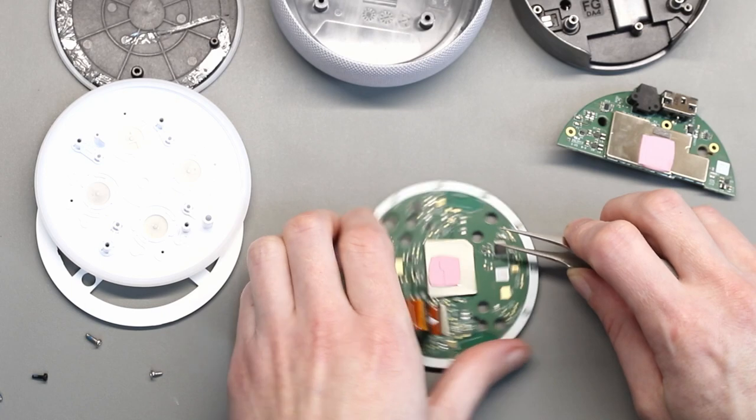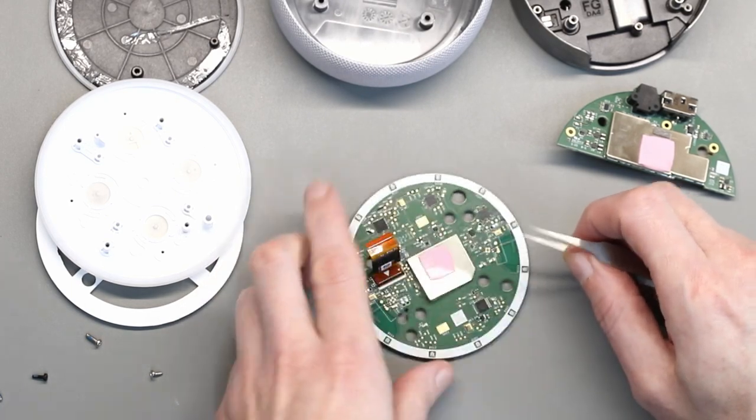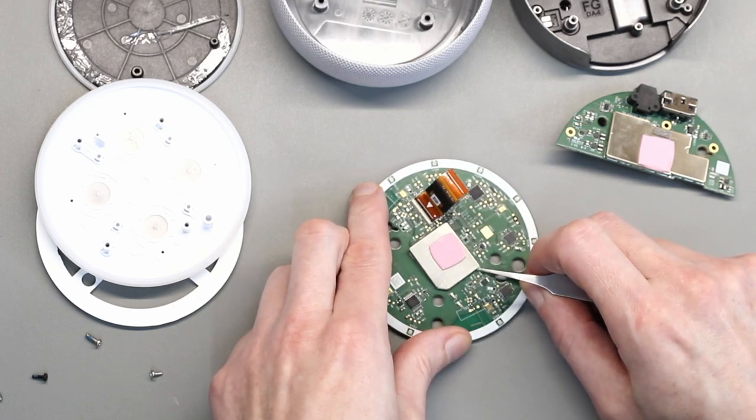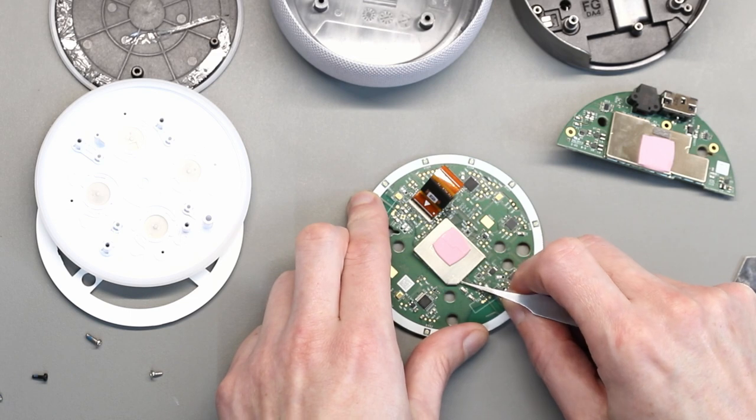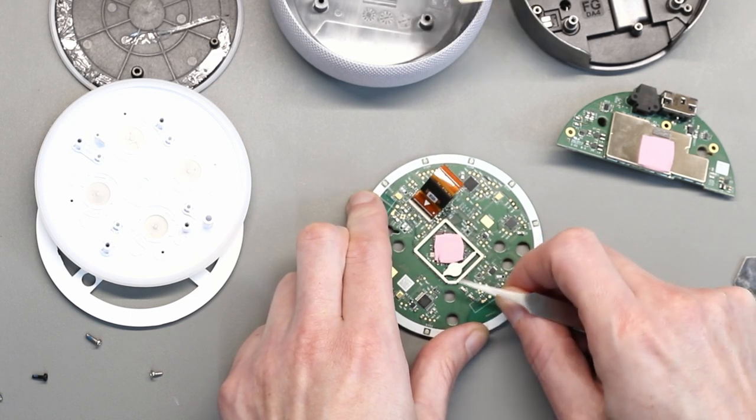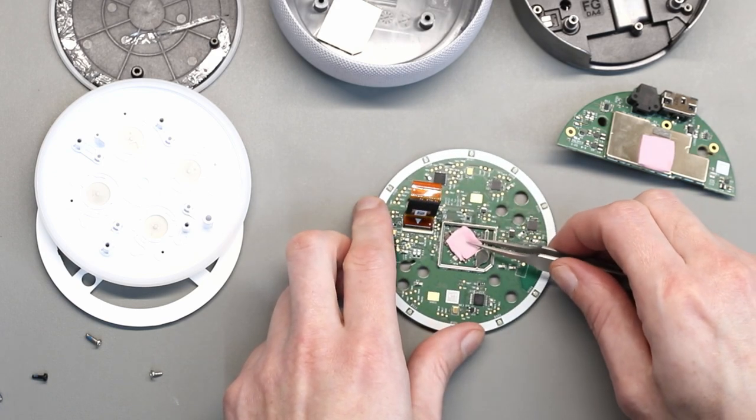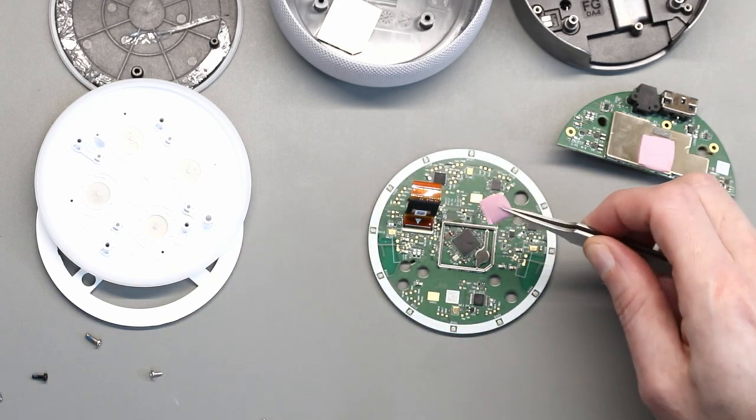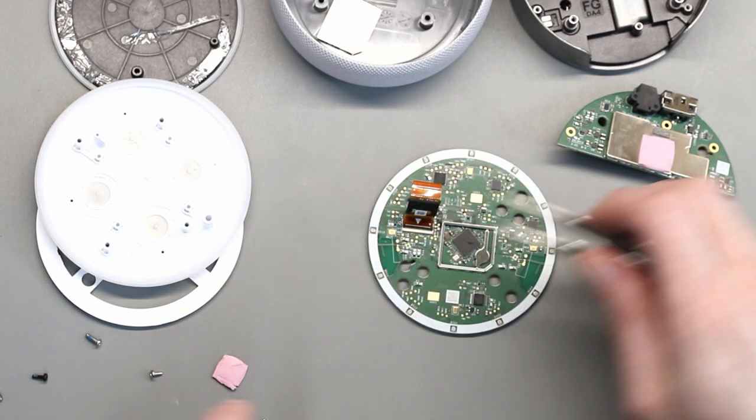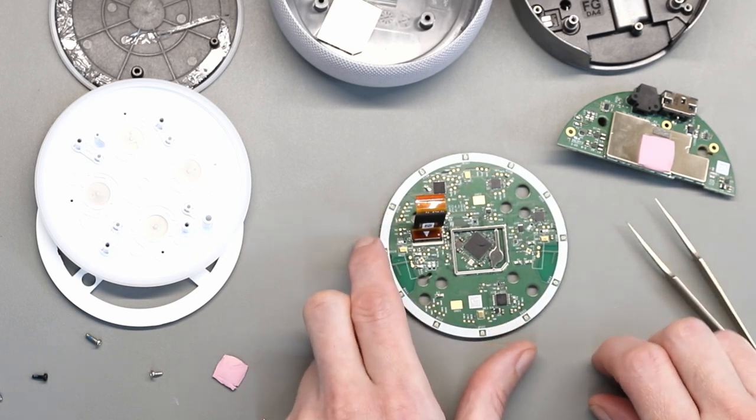So if we take the cover off here, it should pop off. It takes quite a lot of pressure to remove these covers. And then below that there's a small piece of heat transfer paste. Then the processor for the top board is below there.